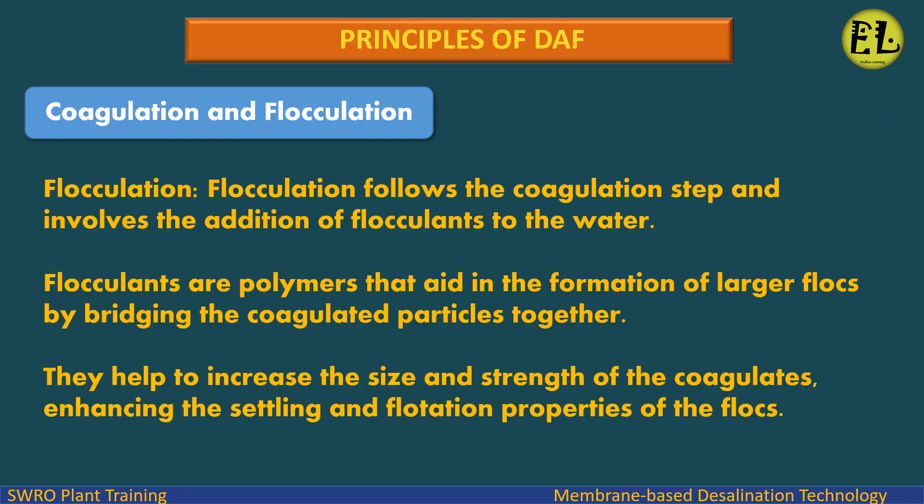Flocculation follows the coagulation step and involves the addition of flocculants to the water. Flocculants are polymers that aid in the formation of larger flocs by bridging the coagulated particles together. They help to increase the size and strength of the coagulates, enhancing the settling and flotation properties of the flocs.